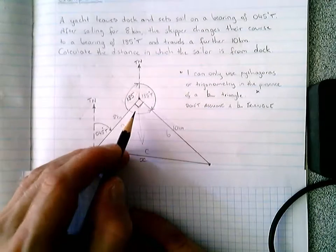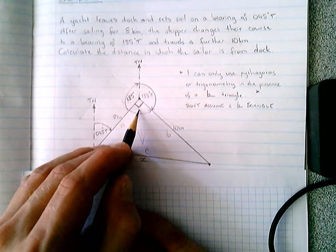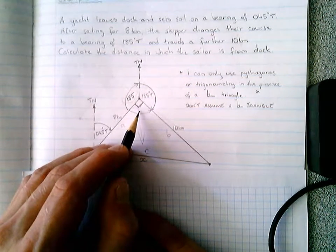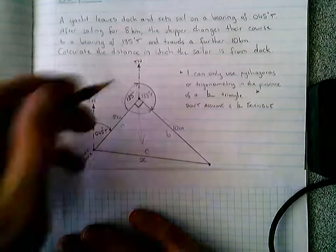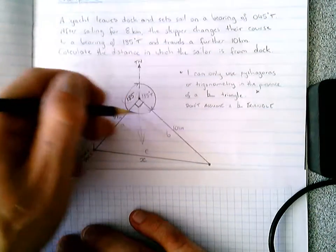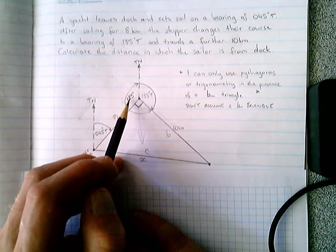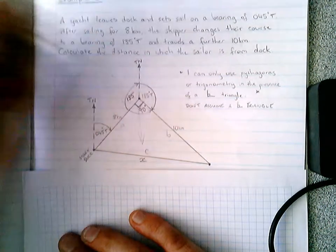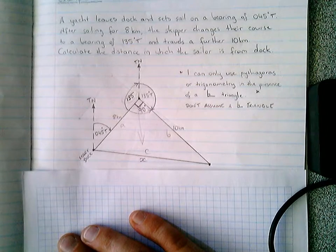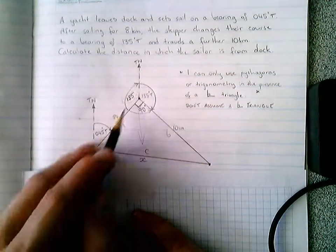We can then figure this angle out to be a 90 degree angle or a right angle because there are 360 degrees in a circle. Here's our circle. If we take 135 and another 135 from 360, we get left with 90, which is our right angle. So there's our right angle triangle,